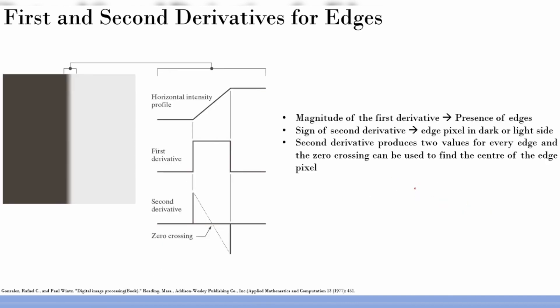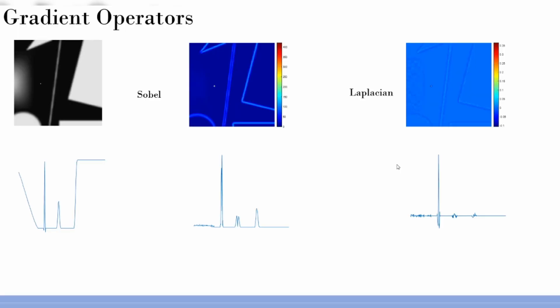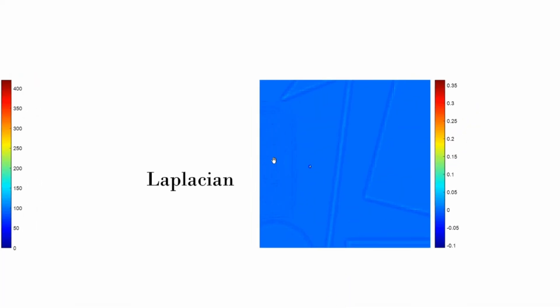We will stop here and build on the edge detection algorithms — going from very basic algorithms towards some advanced ones. There is a trivia: in the case of small disturbances, each and every small variation is actually enhanced or shown in this image, which we really do not want. Think about what we shall do to avoid all this, and we will have that answer in the next lecture. That is all for this lecture — thank you.